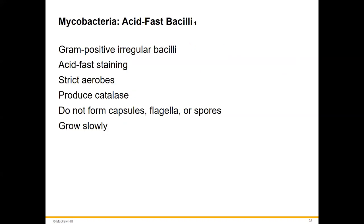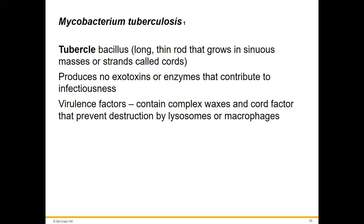Mycobacterium — this is our tuberculosis, our acid-fast bacilli. It will sort of stain gram-positive but doesn't take up gram stain well because of its high fat content in its cell wall, which is why we use an acid-fast stain instead. It's strictly aerobic, produces catalase to survive in oxygen states, non-motile, no spores, no capsules, and it's the classic slow, insidious grower seen with TB infection.